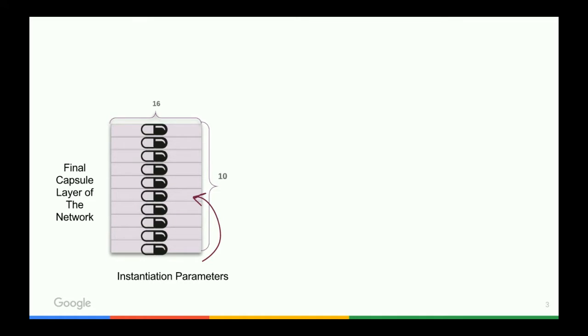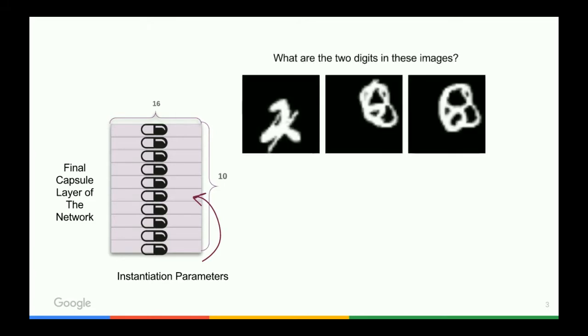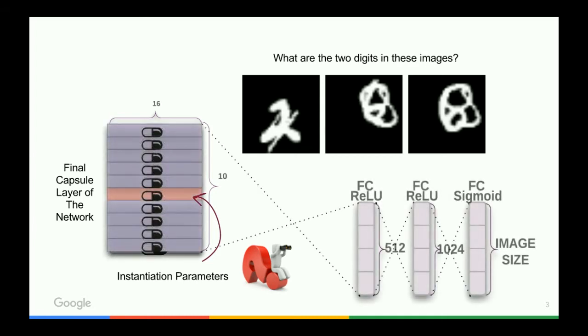To examine the performance of the capsule model on occluded visual recognition, we trained it to classify highly overlapping MNIST digits. In order to verify if the network has encoded the correct pose of each object in the input, we train a reconstruction network on top of the 10 capsules to generate the input image from the 16-dimensional vectors.